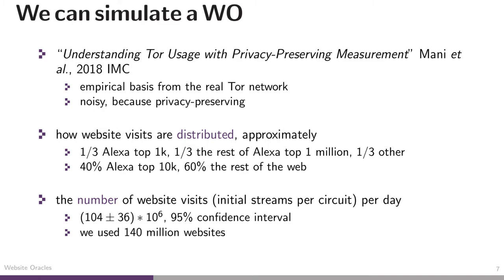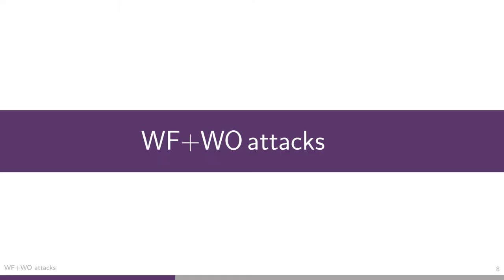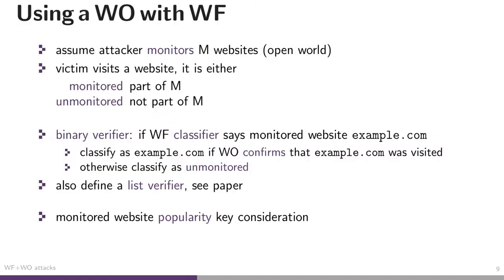Having access to such a website oracle is ridiculously useful for an attacker. In a website fingerprinting attack, an attacker monitors M particular websites in what's called the open world — maybe Google or Facebook. When a victim visits a website, either the victim visits a monitored website or an unmonitored website like petsymposium.org. This gives us the terminology of monitored vs. unmonitored in an open world.